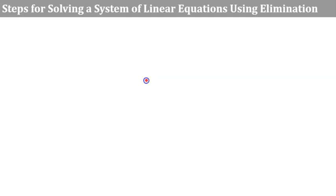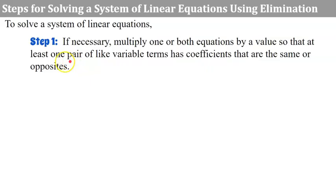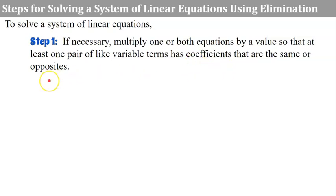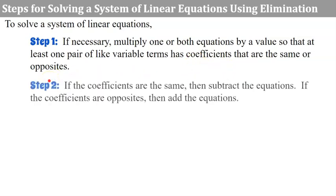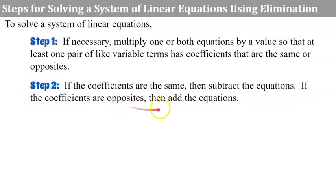Here are our steps. Step one: to solve a system using elimination, if necessary, multiply one or both equations by a value so that at least one pair of like variable terms has coefficients that are the same or opposites. Step two: if the coefficients are the same, then we will subtract the equations. If the coefficients are opposites, then we will add the equations.